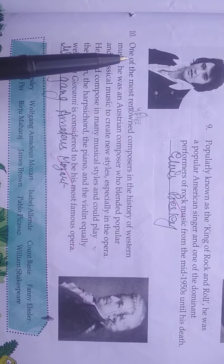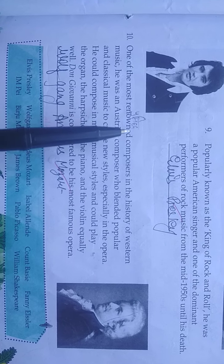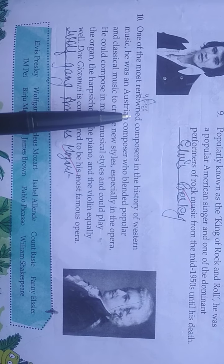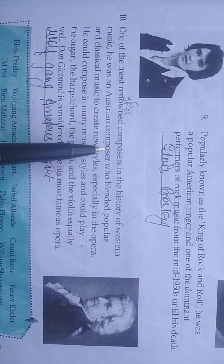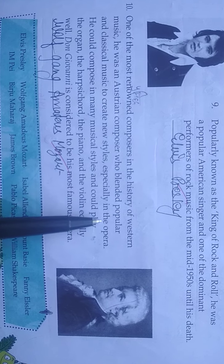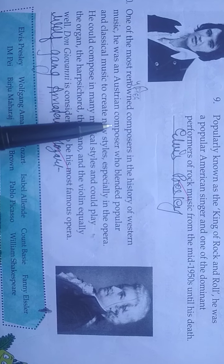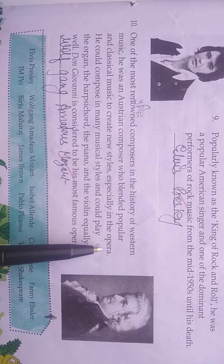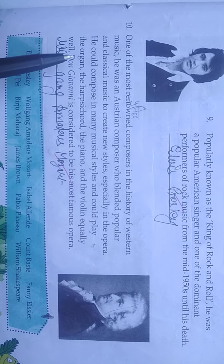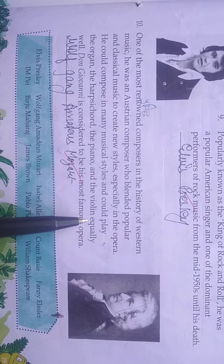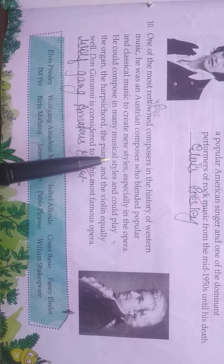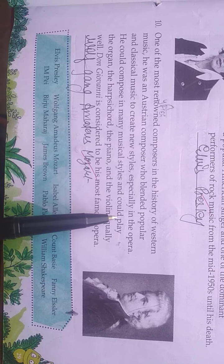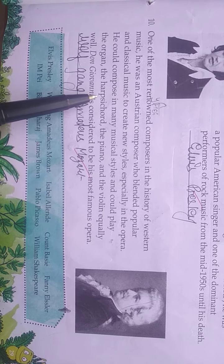Last: one of the most renowned composers in the history of western music. He was an Austrian composer who blended popular and classical music to create new styles, especially in the opera. Ye Austria se belong karte thay — Austrian composer hain jinhone popular aur classical music ko mix karke music ki nayi styles create kiin, especially opera mein. He could compose in many musical styles and could play the organ, the harpsichord, the piano and the violin equally well.